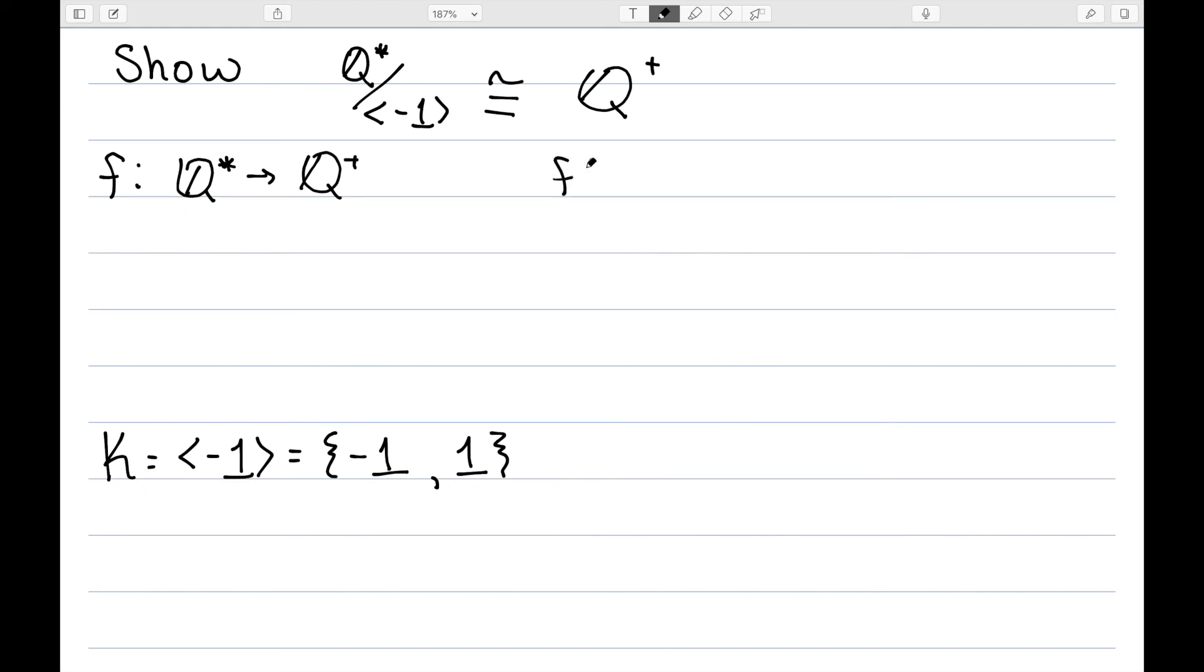The most obvious function that would map all non-zero rationals to the positive rationals would be the absolute value function. It is very clearly onto, since if we want to pick a positive rational number, we can map that number onto itself. So if we pick an X in Q plus, we can just say F of X is equal to X.